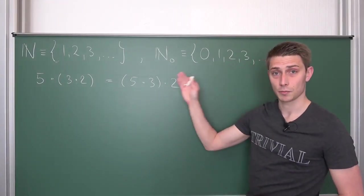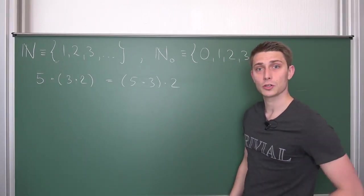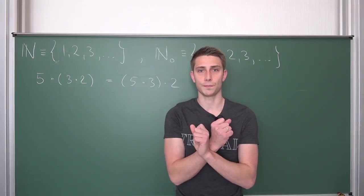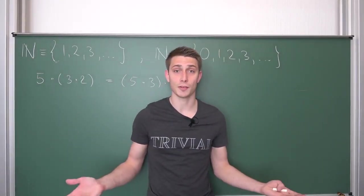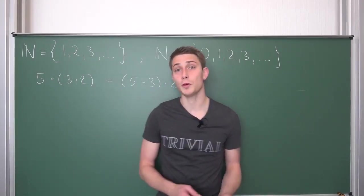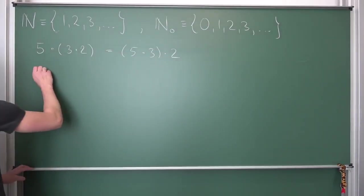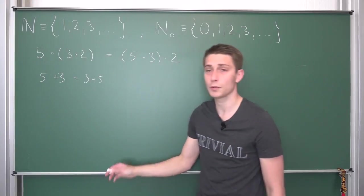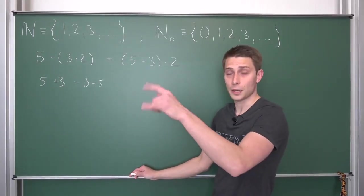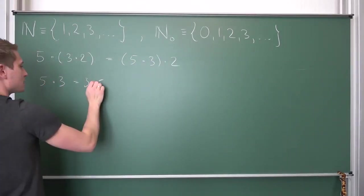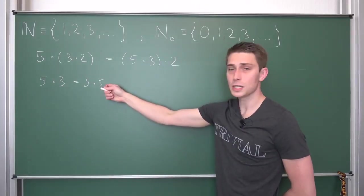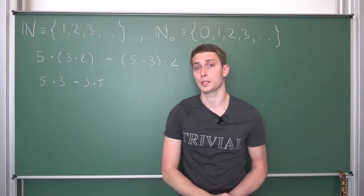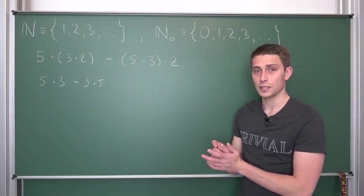Commutativity just tells you that it really doesn't matter how you execute an operation. If I give you three apples and then five apples that's eight — the same as giving you five apples and then three apples. This holds for both addition and multiplication: five plus three is the same as three plus five, and five times three is the same as three times five, both giving fifteen. If you know this you're also one step closer to deriving the binomial formulas for yourself.